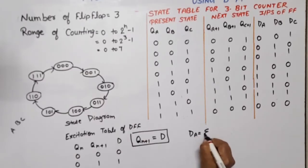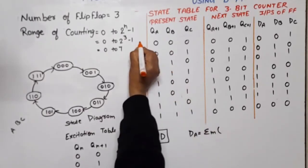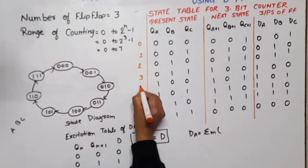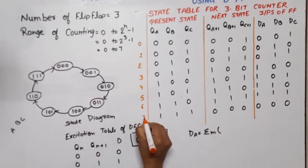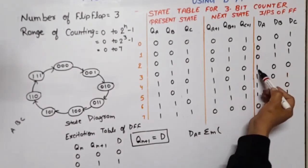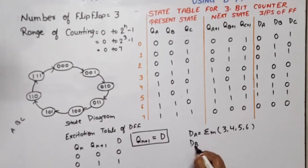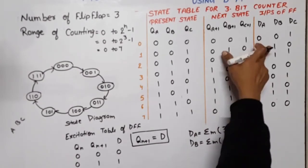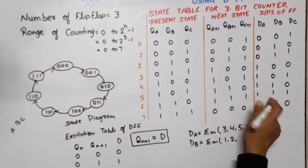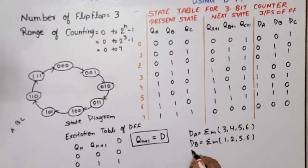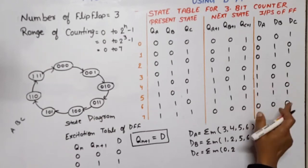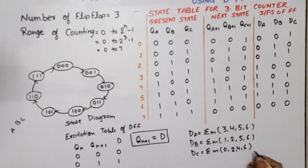Now we need their Boolean equations. DA equals summation of minterms. Looking at decimal equivalents from 0 through 7, DA has 1s at positions 3, 4, 5, and 6 — so DA = Σm(3, 4, 5, 6). For DB, the 1s appear at positions 1, 2, 5, and 6 — so DB = Σm(1, 2, 5, 6). For DC, the 1s appear at positions 0, 2, 4, and 6 — so DC = Σm(0, 2, 4, 6). These are our equations in minterm form.